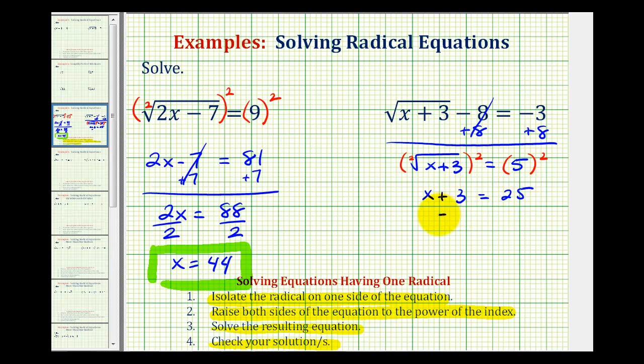So to solve for x, we'll subtract 3 on both sides of the equation, and we have x equals 25 minus 3 is equal to 22.